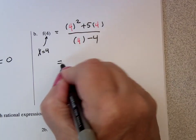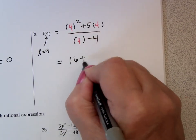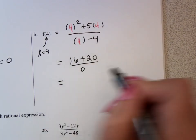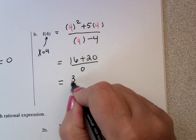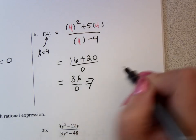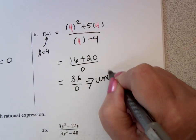So this becomes 16 plus 20 all over 4 minus 4 is 0, which is 36 divided by 0. But 36 divided by 0 or anything divided by 0 is undefined.